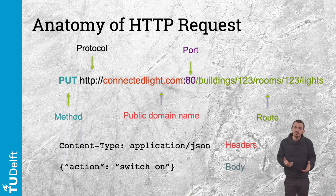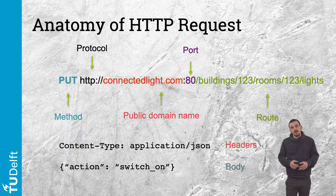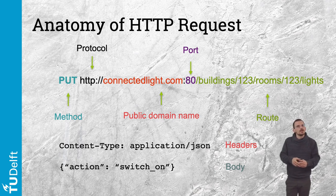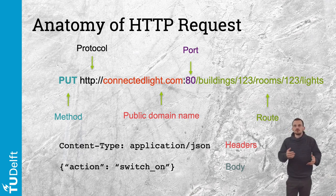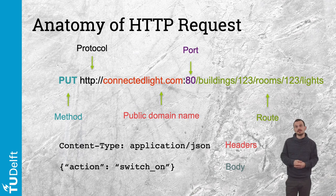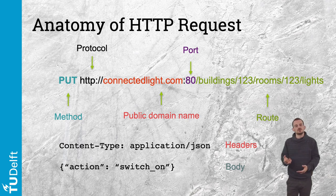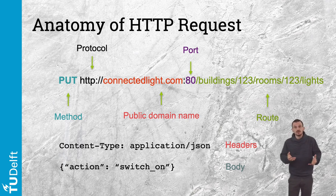An HTTP request also includes headers and a body in addition to the URL and the method. Headers are a set of information that allow the client to specify additional details, such as which device it is, how the response should be structured, and credentials for a resource with limited access. If you've read about cookies and personal information that companies collect about web users, this is where that information transits from client to server. Then we have the HTTP request body, which contains the information to send to the server.